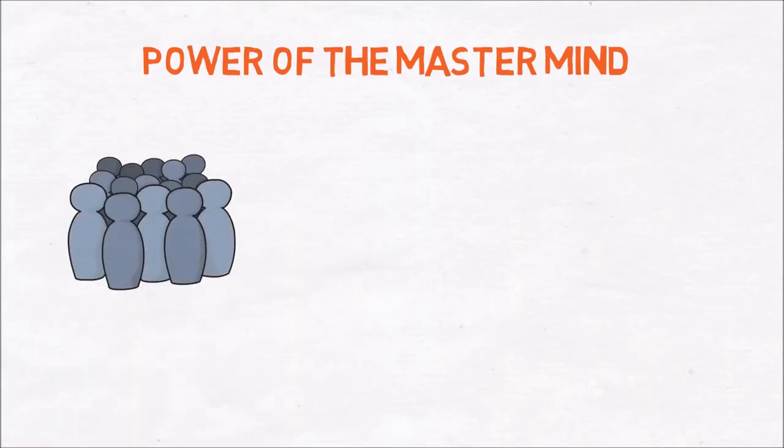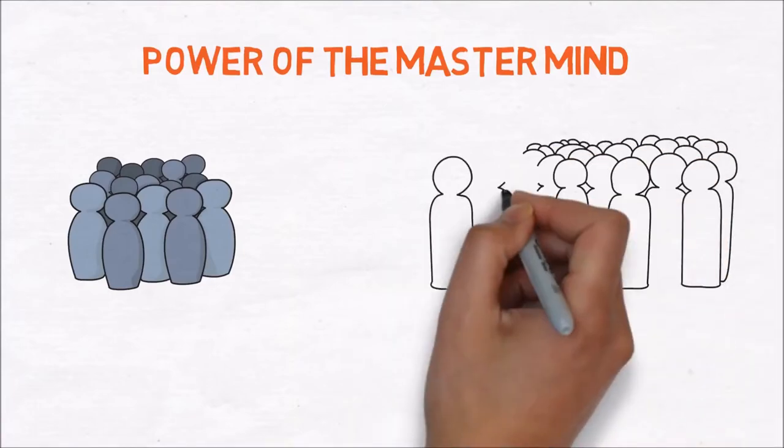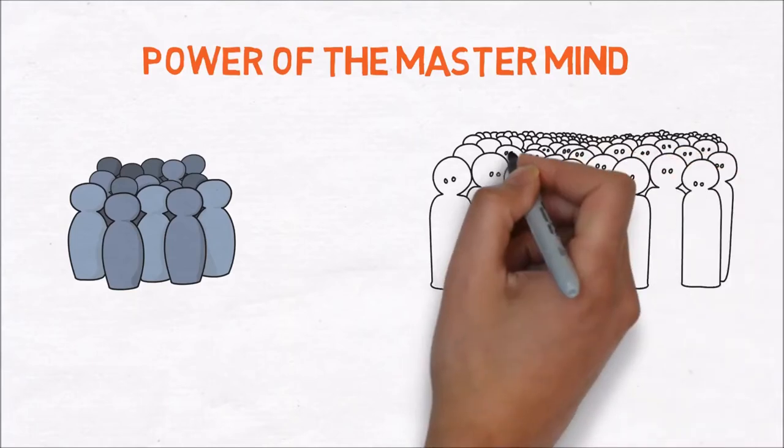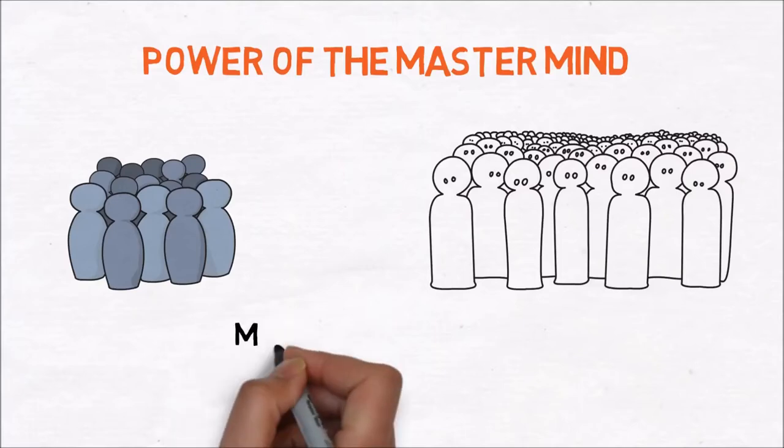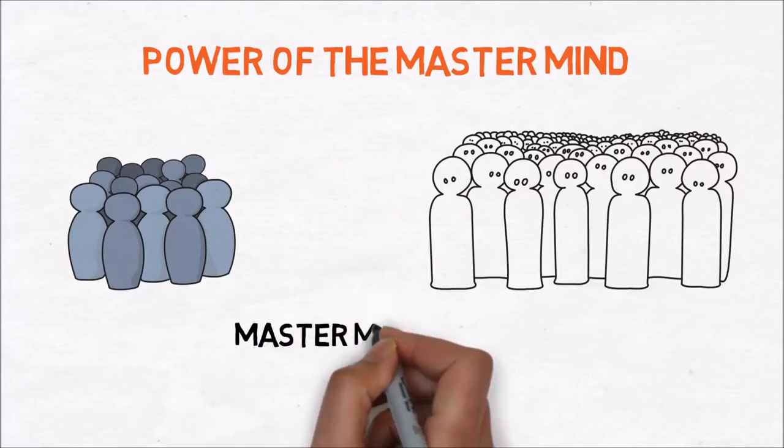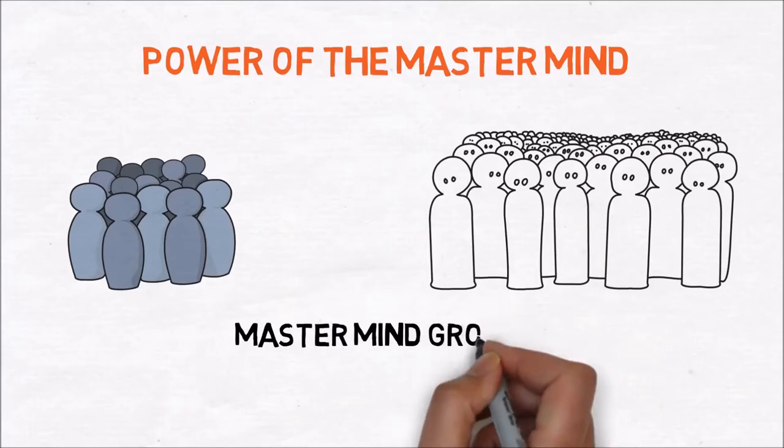You will achieve more if you are surrounded by people who motivate you. This group of inspiring people is called a mastermind group. Hill refers to the power of synergy that a group of like-minded people will reach more together than alone.